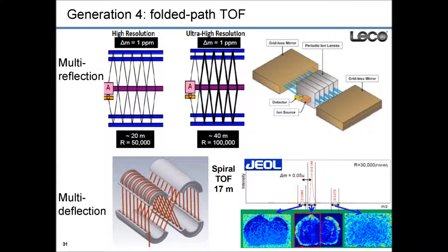The fourth generation, heavily discussed at conferences, is folded-path time of flight. There are several classes: multi-reflection and multi-turn systems. In multi-reflection systems, there are two planar mirrors and ions are ejected from the source in a pulsed manner, continuously focused by intermediate lenses so they never diverge too far, achieving flight lengths not of two meters like modern commercial TOF instruments, but 20 or even 40 meters — which reduces source effects and increases resolving power. In multi-turn instruments, ions are sent on spirals so that the path is multiply folded in a limited volume, also achieving almost 20-meter flight paths with high resolving power, which is used for mass imaging.